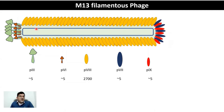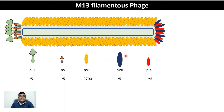This protein coat is made up of several different proteins. At the anterior end you have P3 and the smaller P6. The lateral side is covered by the protein P8. At the posterior end you have two types of proteins, P7 and P9. This is your M13 filamentous phage, around 900 nanometers by 9 nanometers in dimensions.